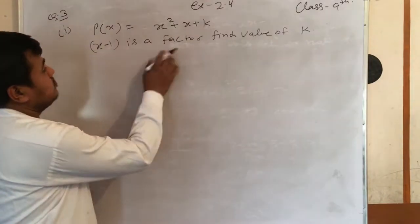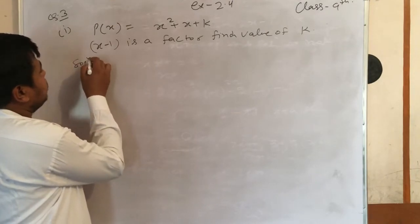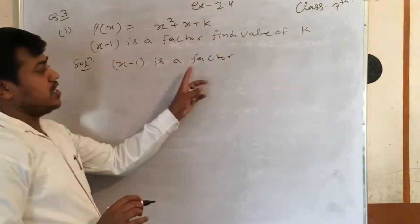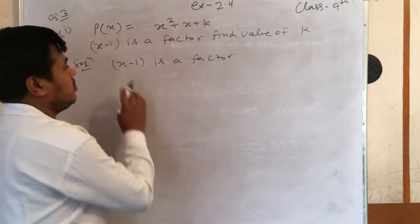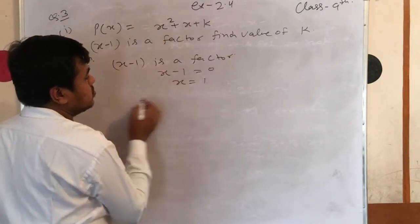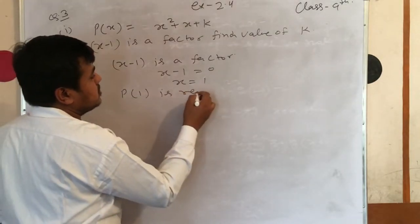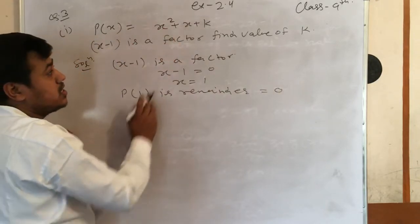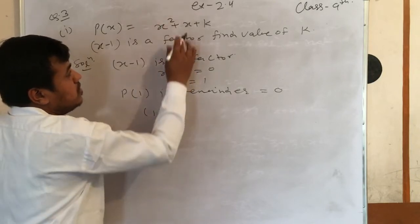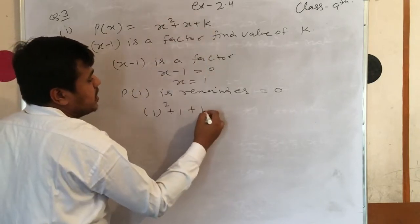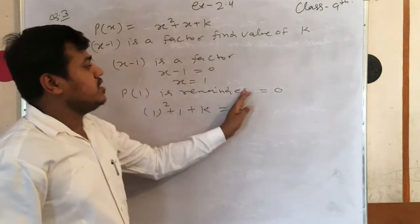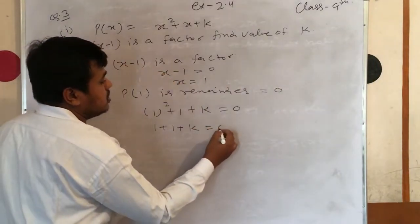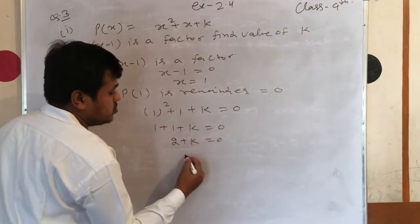Since x minus 1 is a factor, we set x minus 1 equal to 0, which gives x equals 1. Therefore p(1) equals 0. We substitute into the polynomial: x squared plus x plus k equals 0, so 1 squared plus 1 plus k equals 0.